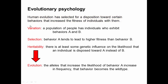Thinking back to earlier parts of the course, variation, selection, and heritability led to evolution. The variation we're thinking about is a population of people that has individuals who exhibit behaviors A and behaviors B. Selection will arise from behavior A tending to lead to higher fitness than behavior B, and heritability arises from there being at least some genetic influence on the likelihood that an individual is disposed towards A or B.